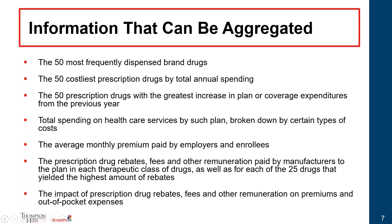If this is data that can be aggregated along the PBM's book of business, how do they identify it for each specific plan? They're likely not going to be able to, if they aggregate the data altogether — it won't be on a plan-by-plan basis. There is plan-specific information that the plan or someone on behalf of the plan will have to enter, but once information is reported by the PBM, it will be aggregated and won't reflect information on a single plan.